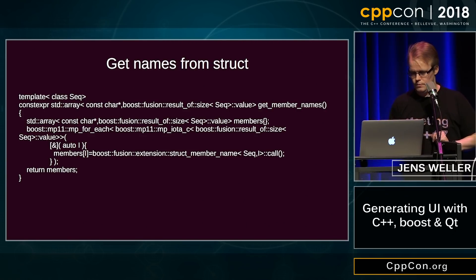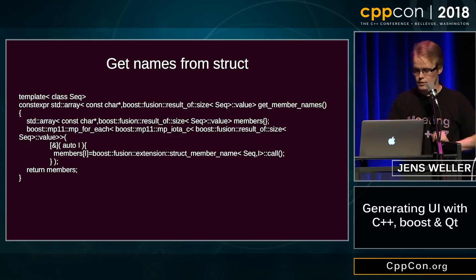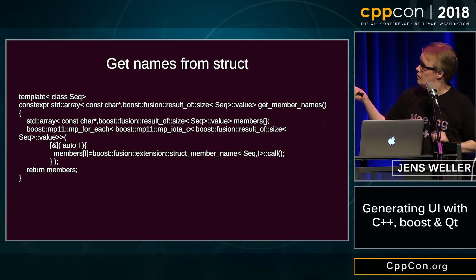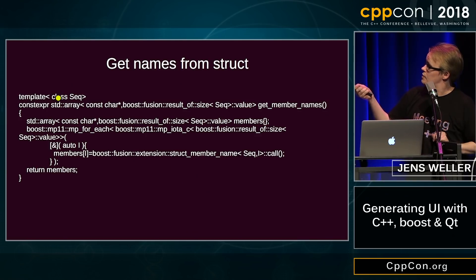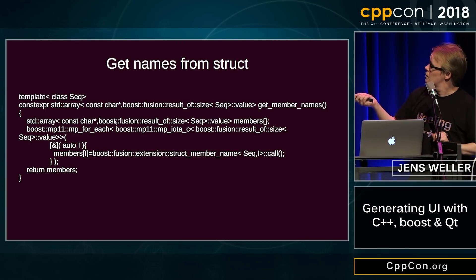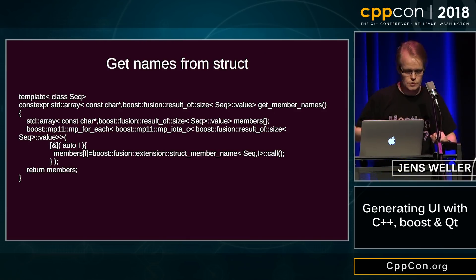With Fusion, if you play around a little bit, you get nice things. For example, you can extract the names of all members and nicely pack them into an STD array, then just call for_each via Boost MP11, ask Fusion for every member name, and return that easily.